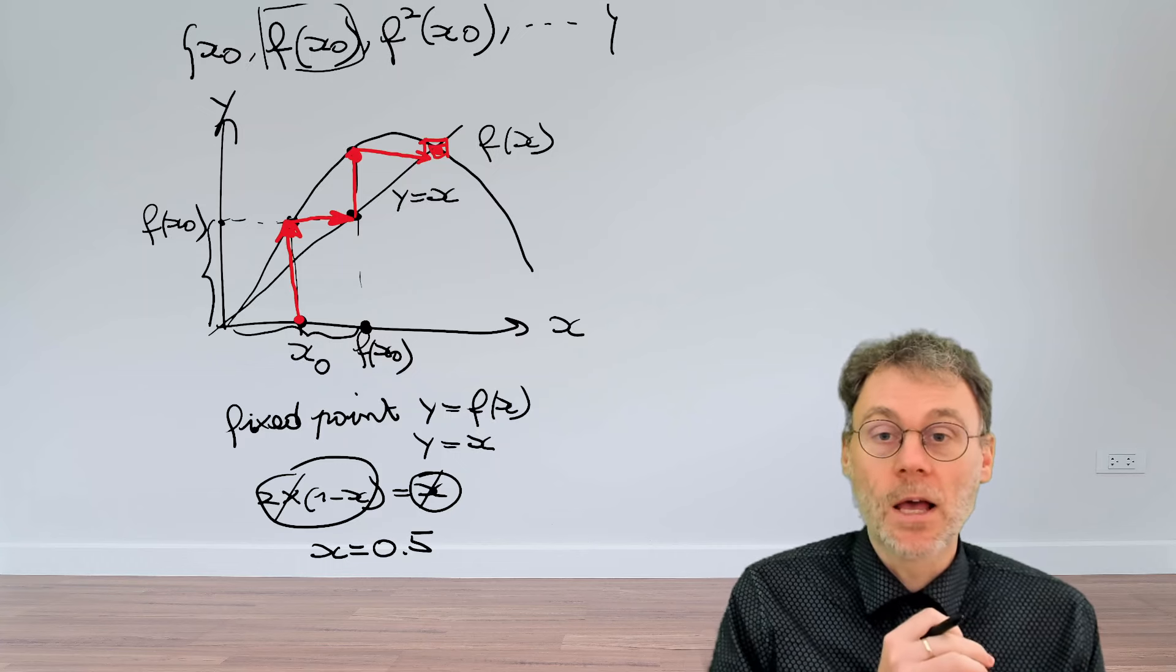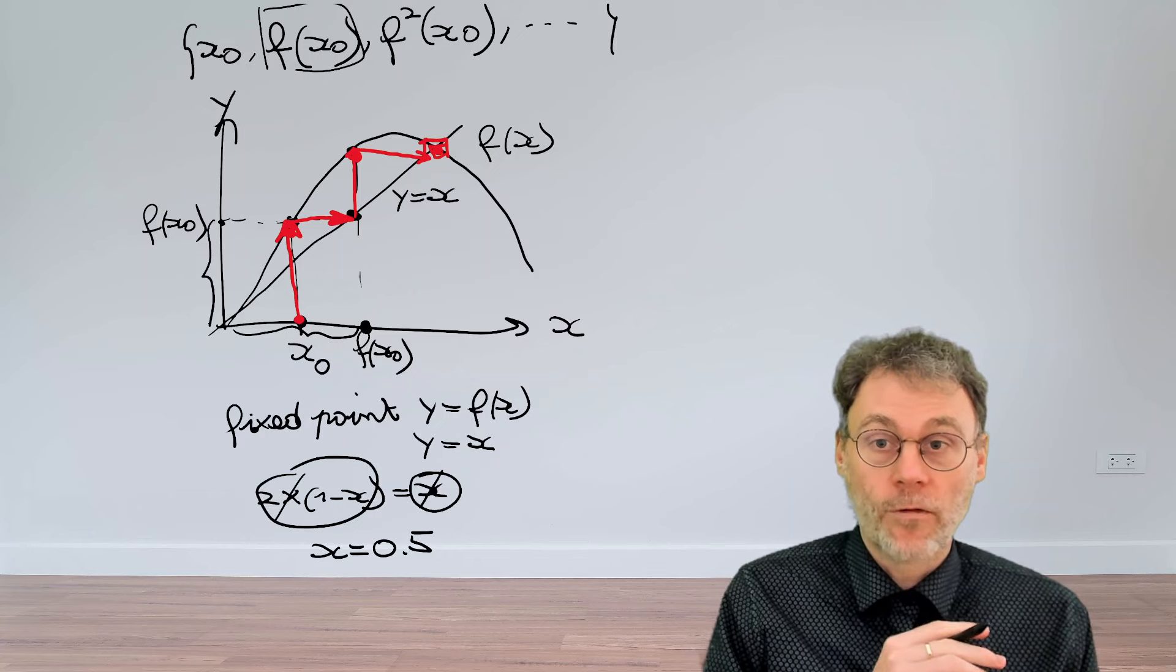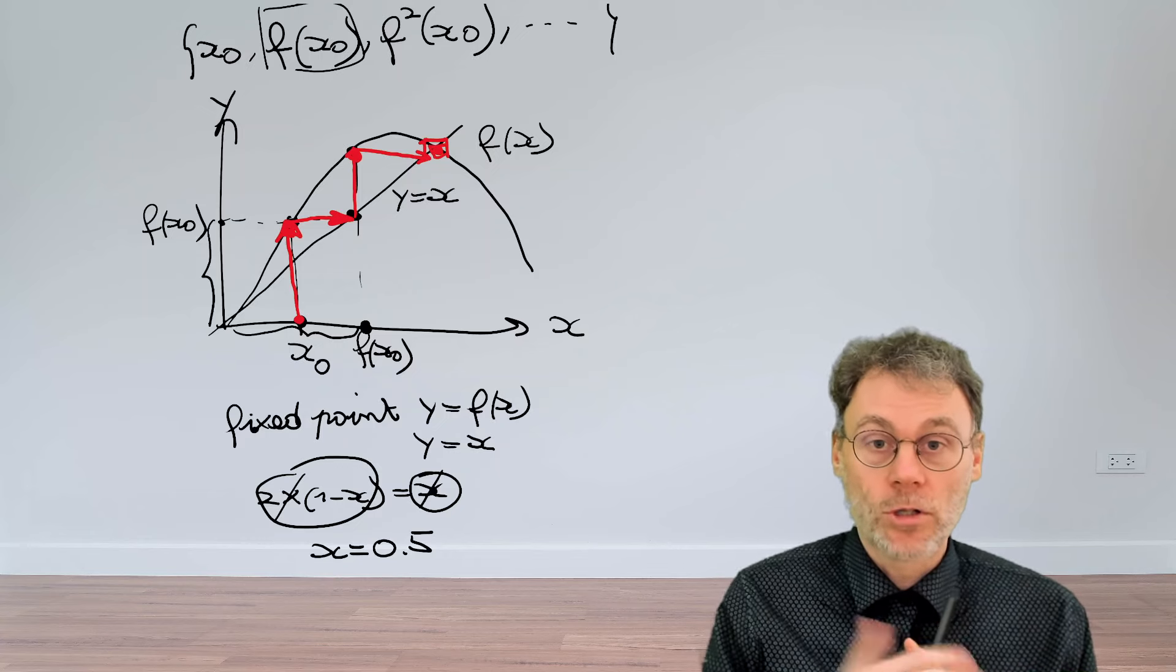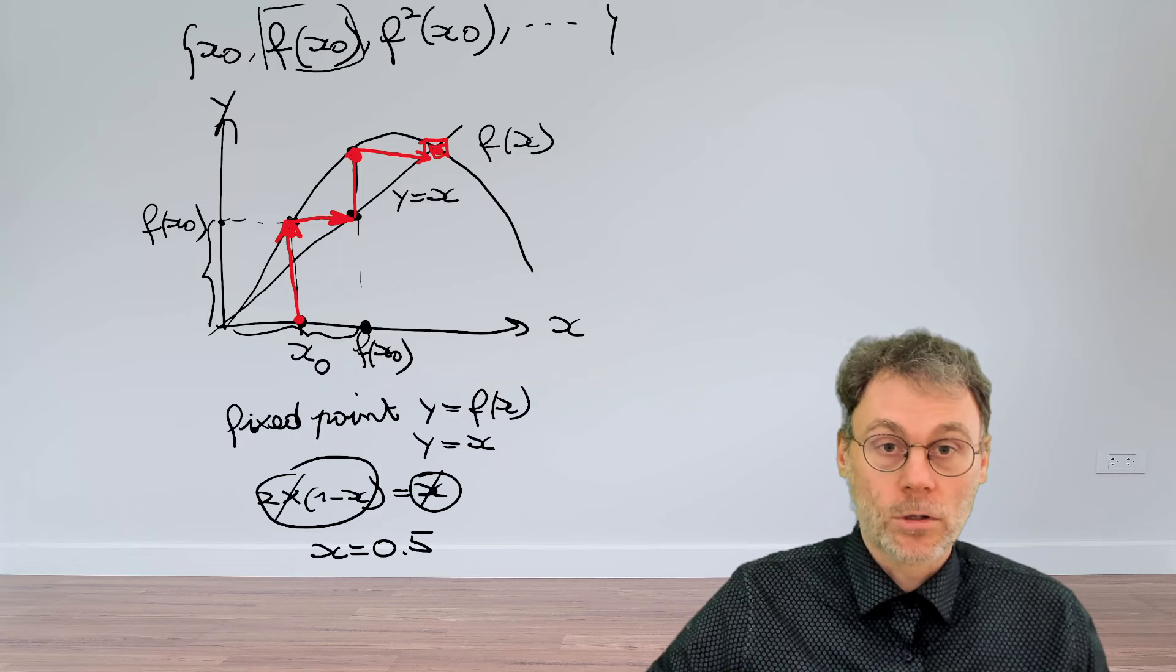So there you have it. A graphical representation of the orbit of an initial point under a certain map, the so-called cobweb diagram.